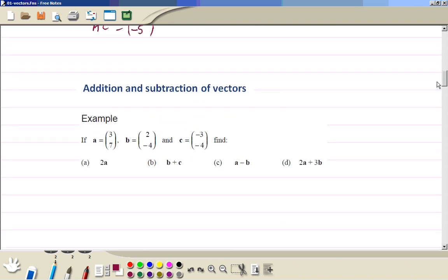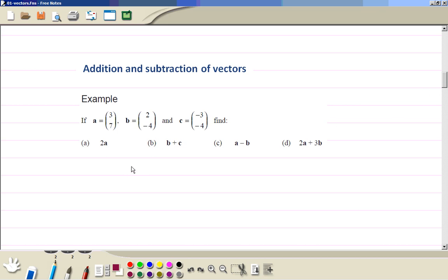Now adding and subtracting vectors, what we do simply is deal with x part with x and y part with y. First one is 2a. This vector is just twice the vector a, so just multiply each component, x and y, by 2. So this is 6, 14. Then b plus c, so we just add the x components, 2 plus minus 3 gives minus 1, and minus 4 plus minus 4 gives minus 8.